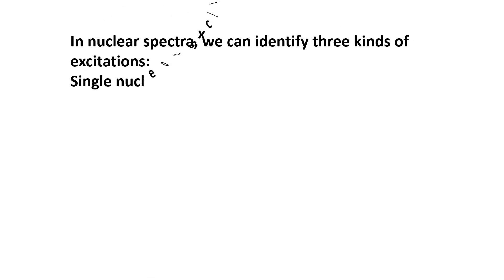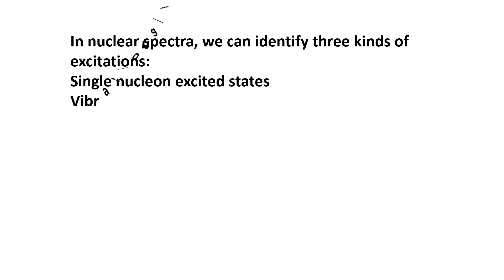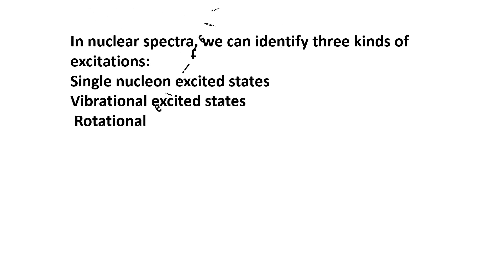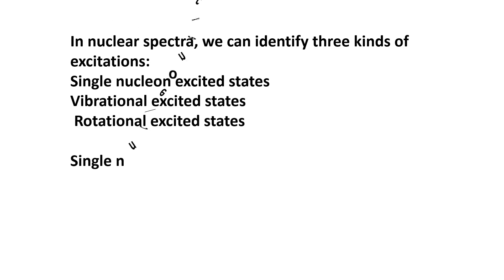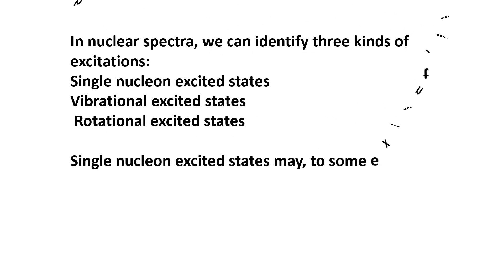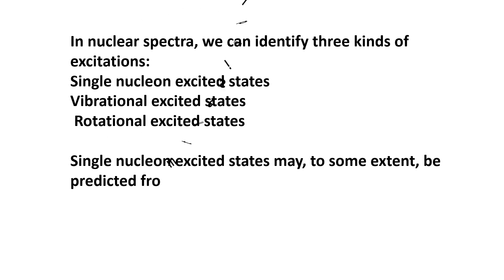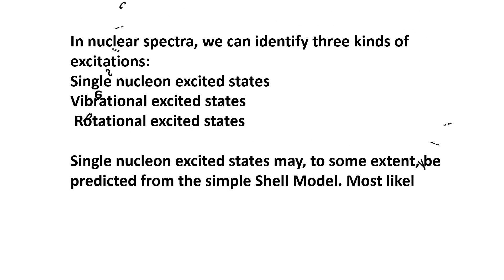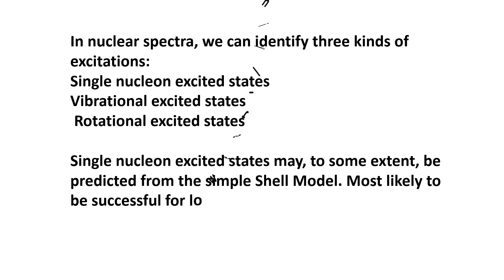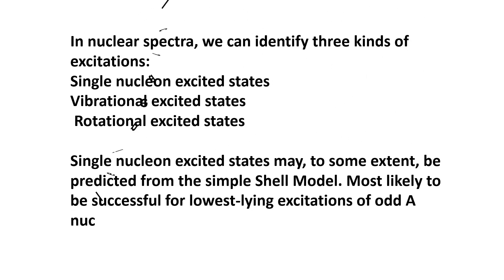In nuclear spectra, we can identify three kinds of excitations: single nucleon excited states, vibrational excited states, and rotational excited states. Single nucleon excited states can to some extent be predicted from the simple shell model, mostly likely to be the lowest-lying excitations of odd-number nuclei close to closed shells.